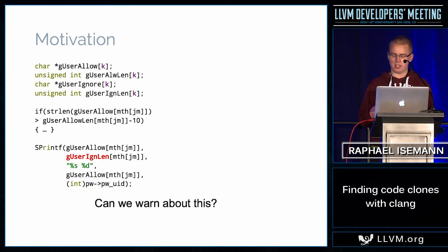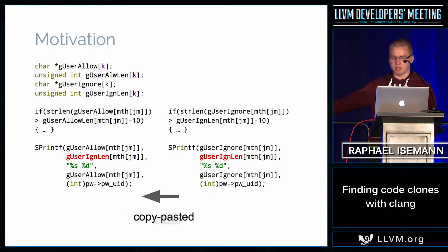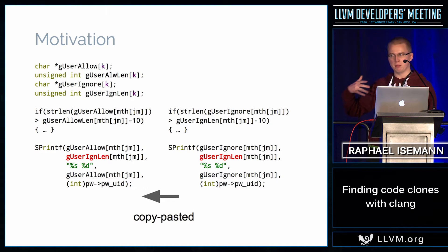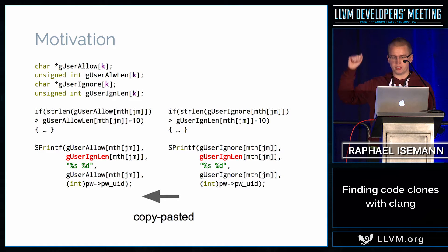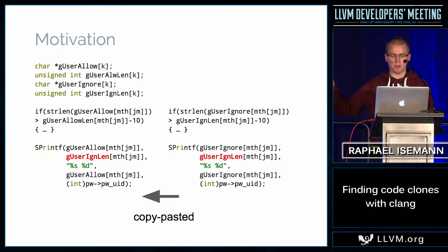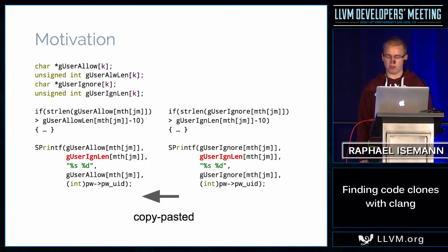If you look at the history, we see that in the same code file there's another piece of code which is strikingly similar, and we actually find our wrong line in this other piece of code. We can make the assumption that the code was copy-pasted, because it's nearly the same functionality — one for allowed users and one for ignored users — and the developer just forgot to change this one variable, and we got this really nasty bug.